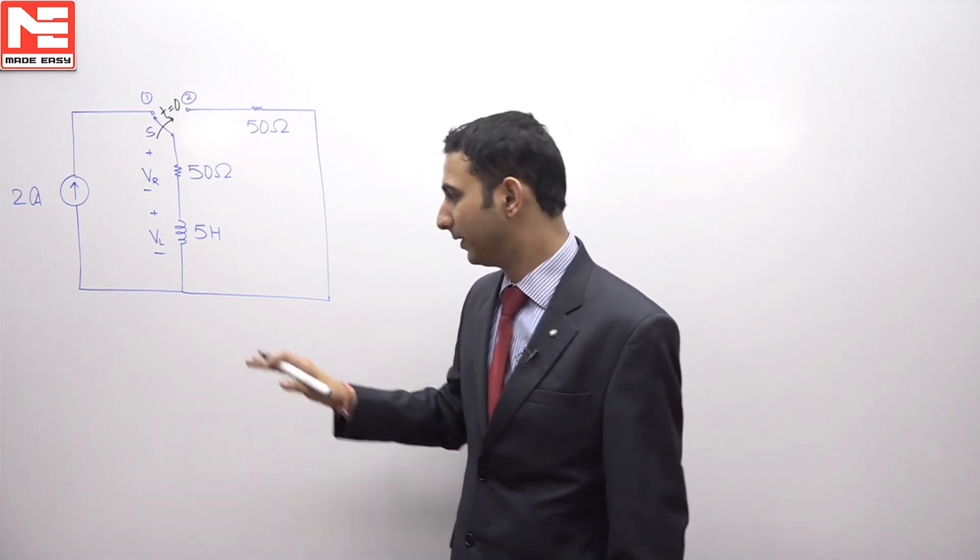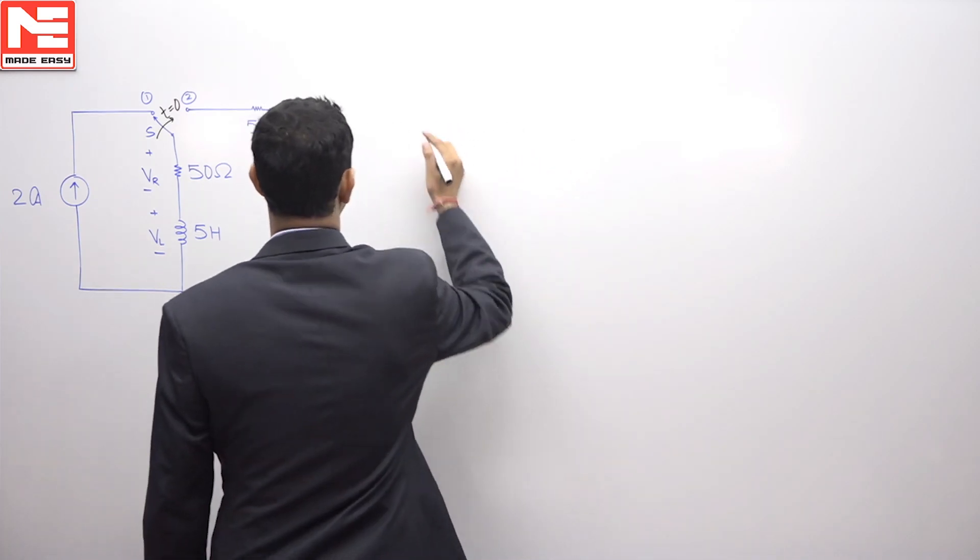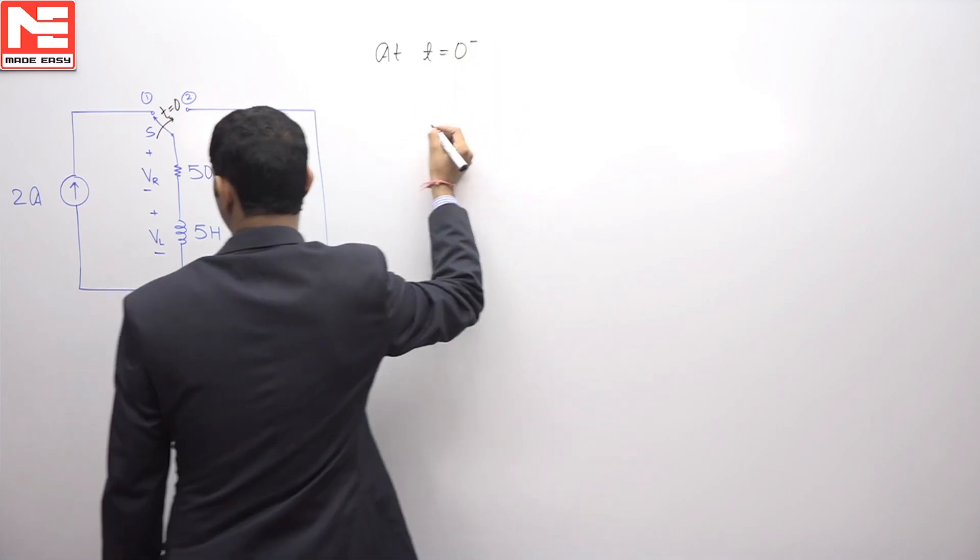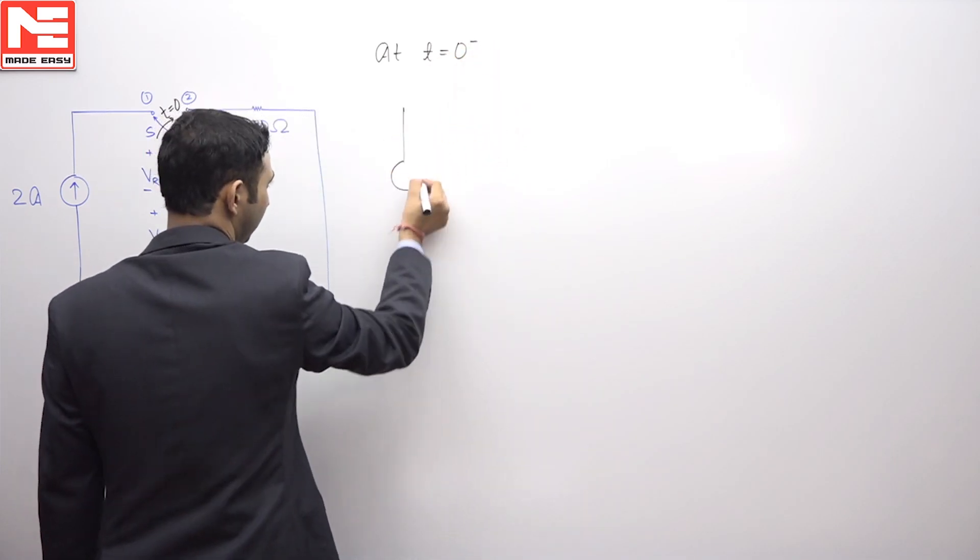So let us develop the circuit at t equals 0 negative. At t equals 0 negative, the circuit was this.